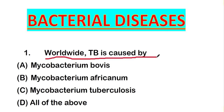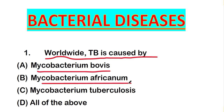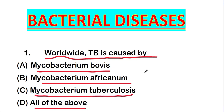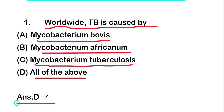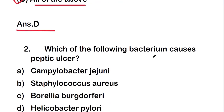The first question is: worldwide TB is caused by which organism? The options are Mycobacterium bovis, Mycobacterium africanum, Mycobacterium tuberculosis, or all of the above. The right answer is option D — all of the above — so TB is caused by all of these microorganisms.